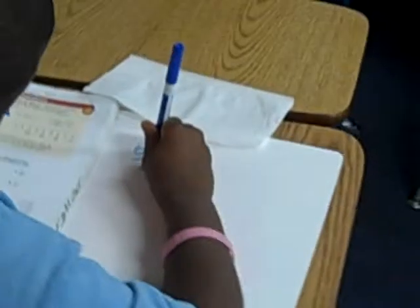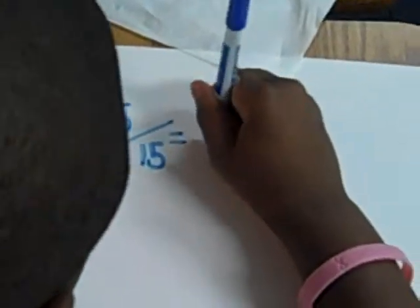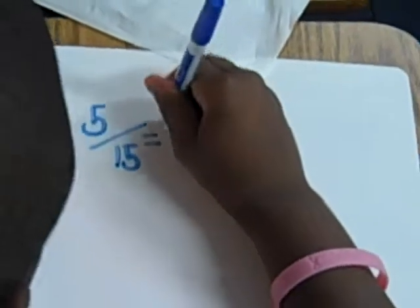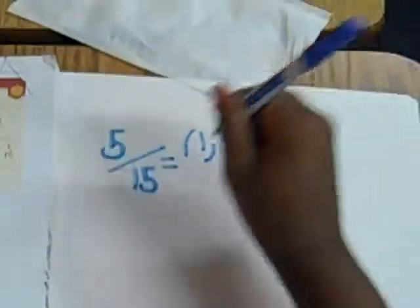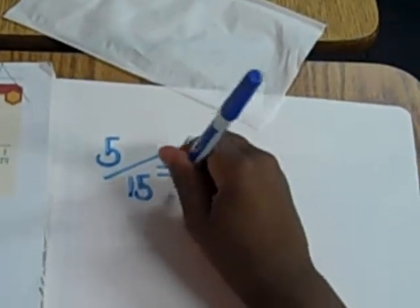Okay? Very good. All right. Let's go ahead and write five fifteenths. Okay? Find the greatest common factor. Five.